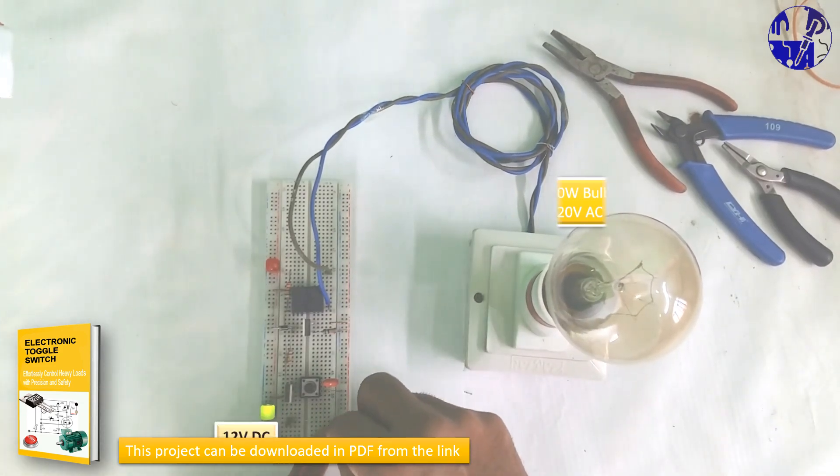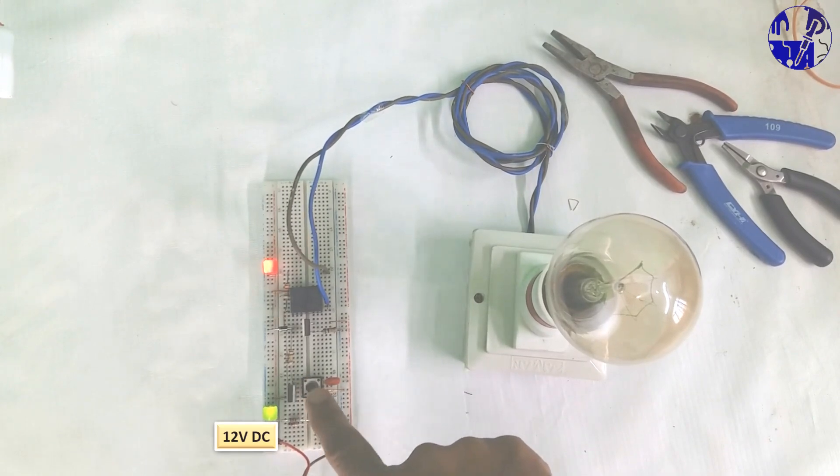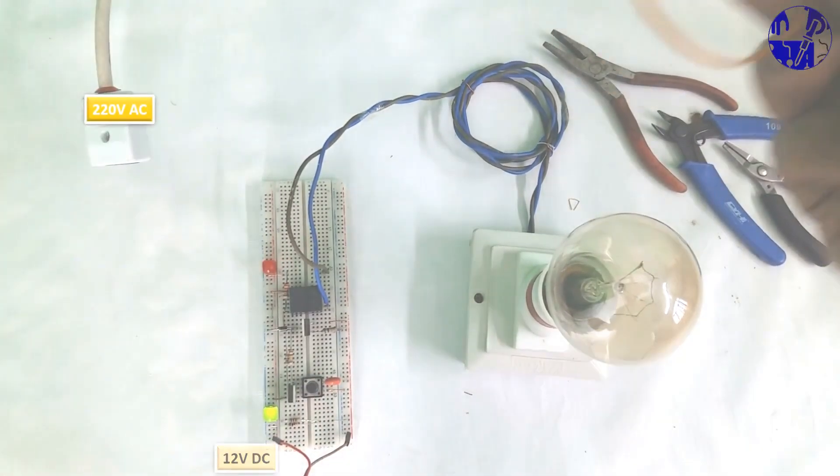Now proceed to wire the load you intend to control. Apply a 12-volt power supply to the circuit for activation.